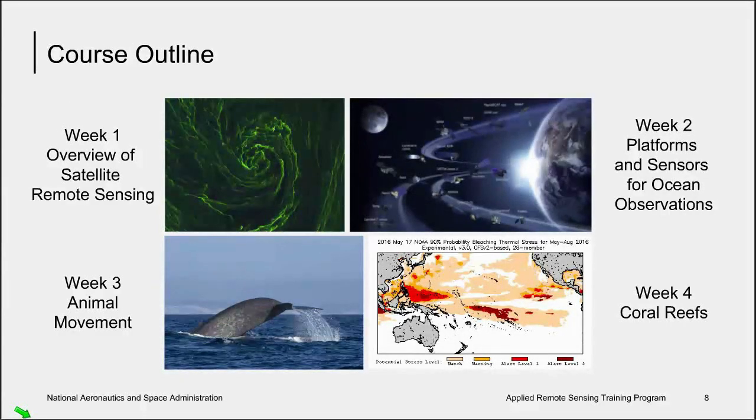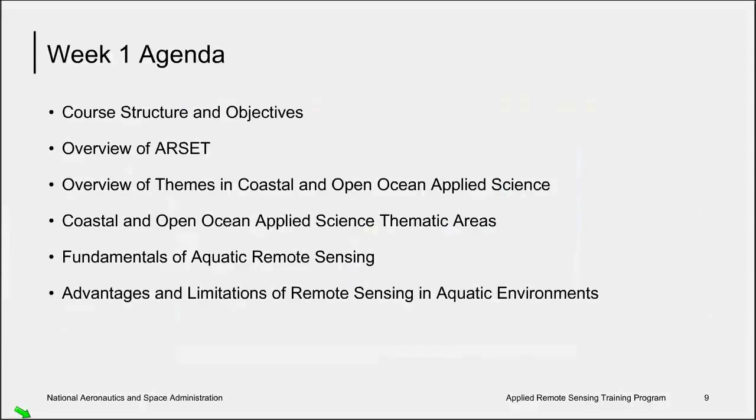So the course outline. This week, I'll be giving an overview of satellite remote sensing in aquatic systems. In week two, I will cover satellite platforms and sensors commonly used for ocean observations. In week three, we will learn about remote sensing tools to understand animal movement and migration. And in the fourth week, I'll go over coral reef biology, satellite sensors used to understand coral reef health, and a remote sensing tool to forecast coral reef bleaching events.